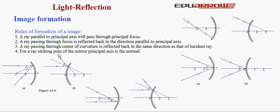Rule 2: a ray passing through focus is reflected back in the direction parallel to the principal axis. In concave mirror, this ray passes through focus and after reflection becomes parallel to the principal axis. Rule 3: a ray passing through center of curvature is reflected back in the same direction as the incident ray. In convex mirror, the ray appears to rebound back after passing through the center of curvature.